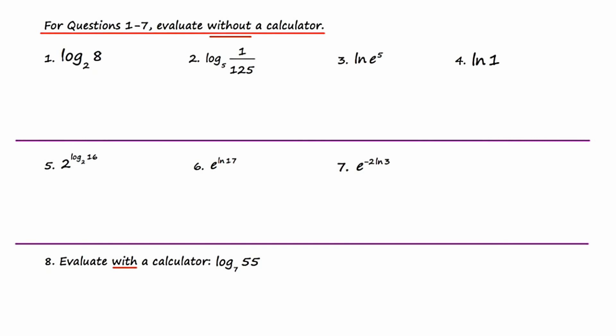In number one, I'm going to schwing, and here's my internal dialogue. Two raised to some power is equal to eight. So two to what power is equal to eight? Well, the answer is going to be three. Two to the power of three is equal to eight.